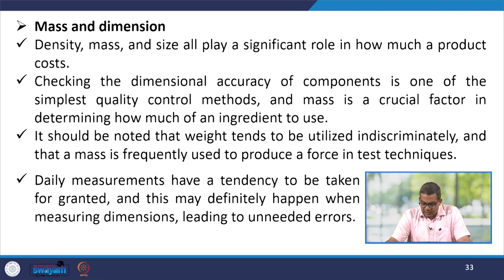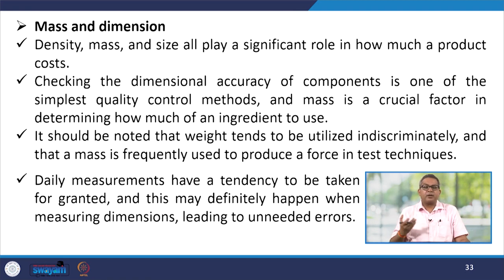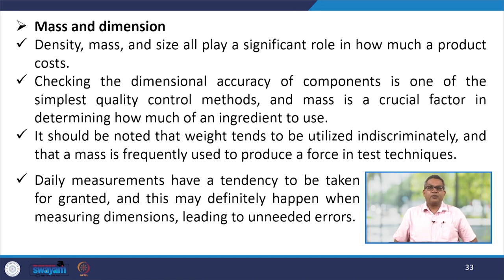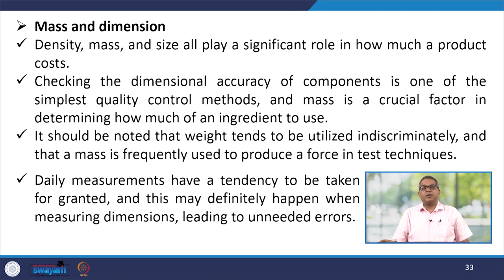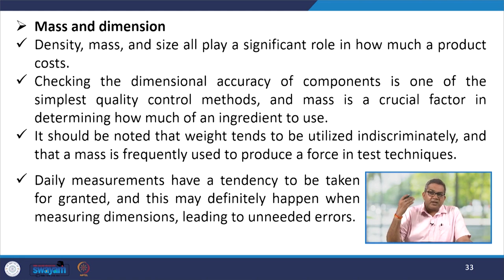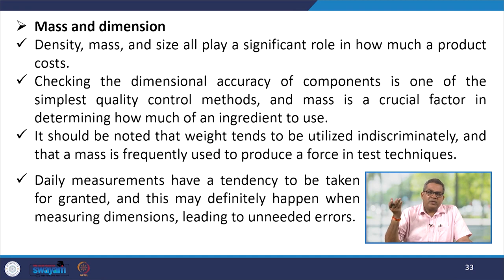Let us talk about mass and dimension. Density, mass, and size all play a very significant role in how much a product costs. Checking the dimensional accuracy of a component is one of the simplest quality control methods, and mass is a crucial factor in determining how much of an ingredient to use, which is significant for recipe optimization. It should be noted that weight tends to be used indiscriminately, and mass is frequently used to produce a force in test techniques. Daily measurements have a tendency to be taken for granted, which may lead to unneeded errors when measuring dimensions.